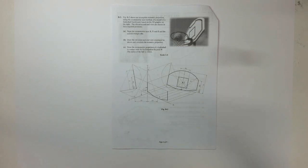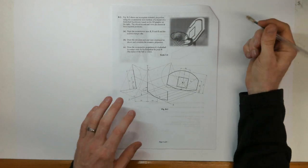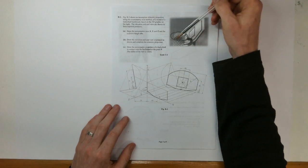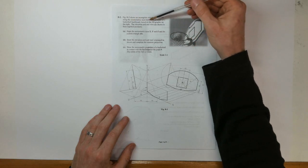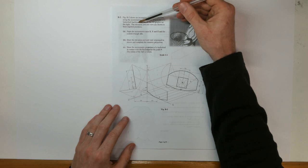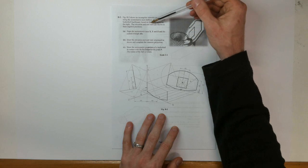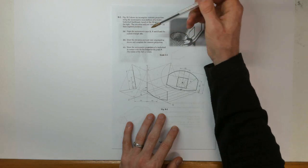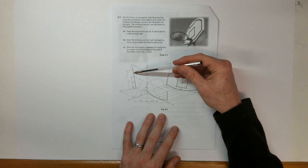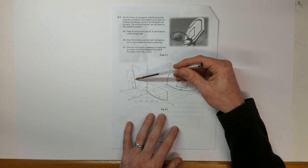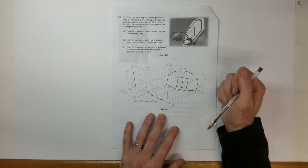Welcome to 2014 question B2. It's an axonometric projection question. We've got the image here that shows an incomplete trimetric projection using axonometric axis method of a model of a basketball backboard. Based on the 3D graphic on the right, the elevation and end view are also shown in your required position. The board is appearing as a flat 2D line or surface rather than having depth as you can see here in the image.